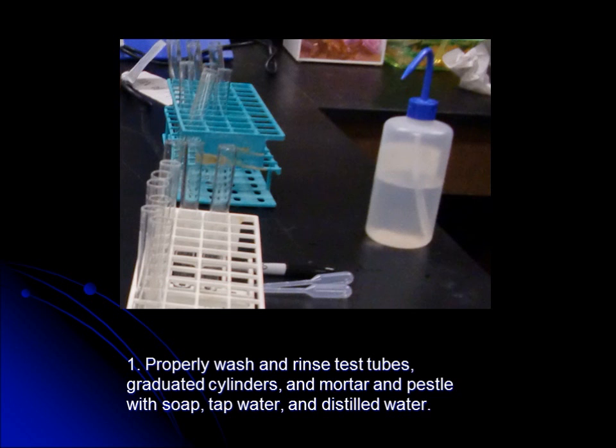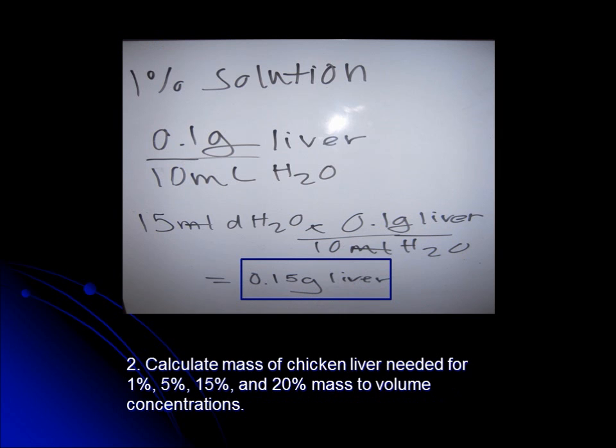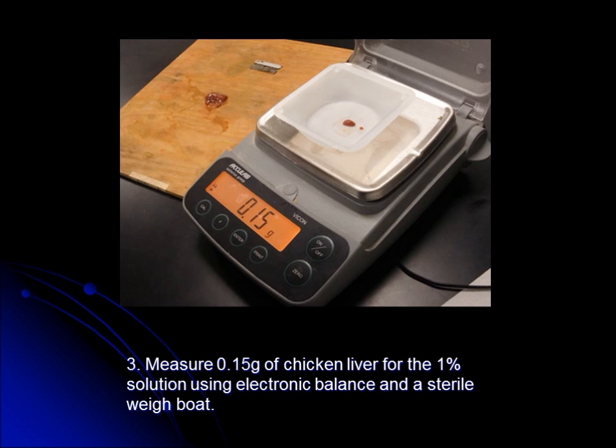Step 1: Properly wash and rinse test tubes, graduated cylinders, and mortar and pestle with soap, tap water, and distilled water. Step 2: Calculate the mass of chicken liver needed for 1%, 5%, 15%, and 20% mass per volume concentrations.